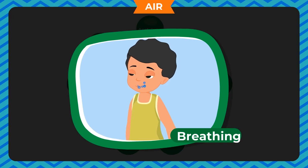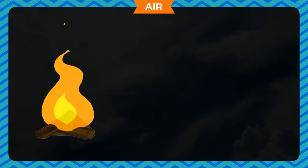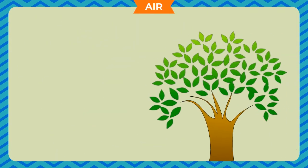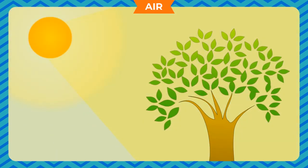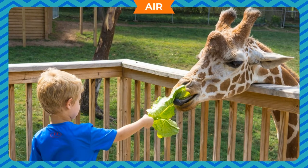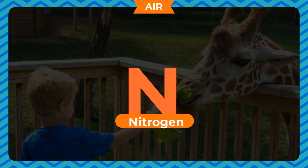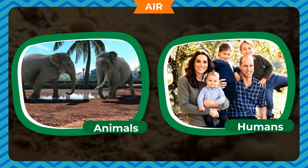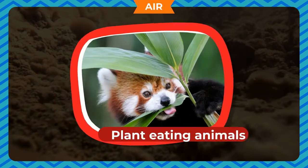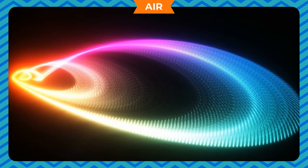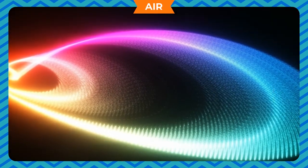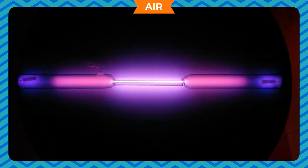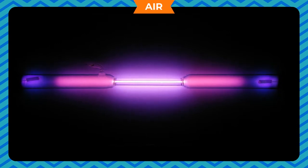Oxygen is also needed for burning. There is only 0.03% carbon dioxide in air — it is the gas that helps plants make their food by the process of photosynthesis. Living things cannot directly use the nitrogen present in the air; plants absorb nitrogen from certain bacteria in the soil, and animals and humans get nitrogen from plants or plant-eating animals. Neon is a colorless and odorless gas that glows bright orange-red in an electric field, so it is used in electric signboards. Argon is used in glass tubes to produce a violet-colored glow.